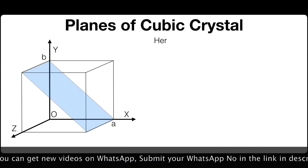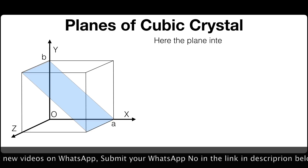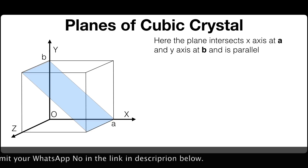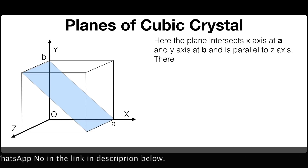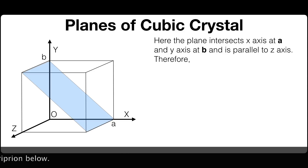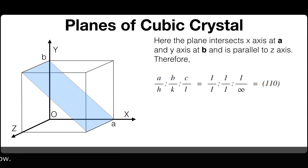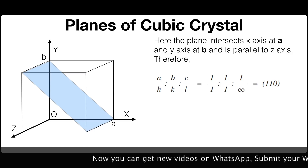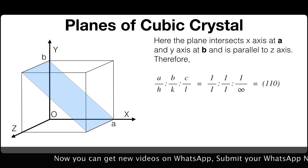Here the plane intersects the x-axis at A and the y-axis at B, and is parallel to the z-axis. Therefore the ratios become A/H : B/K : C/L = 1/1 : 1/1 : 1/∞, which equals 1, 1, 0. So the Miller indices of this plane is (1 1 0).